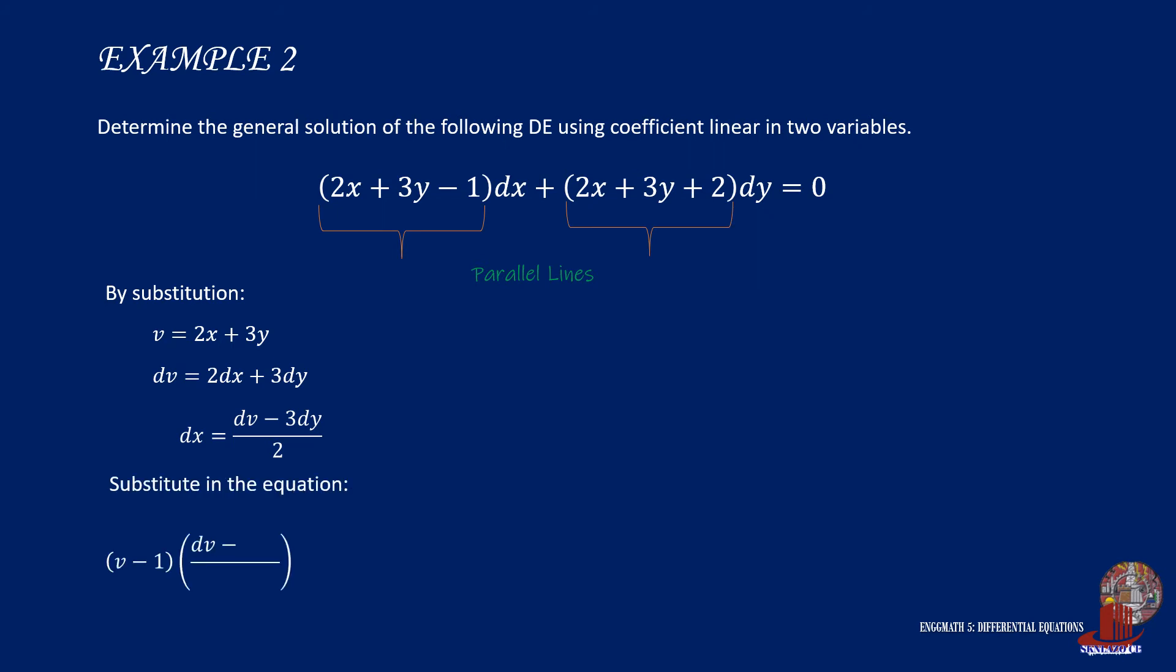Place these substitutions into the original equation. Multiply the whole equation by 2 to remove the denominator and distribute terms to simplify coefficients. From the long formula, collect all dv's and dy's.